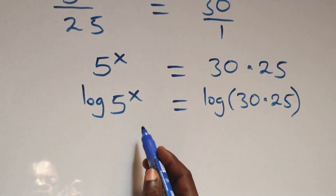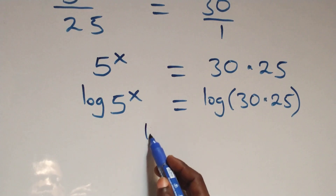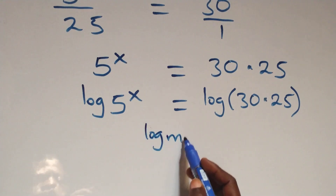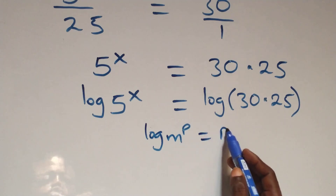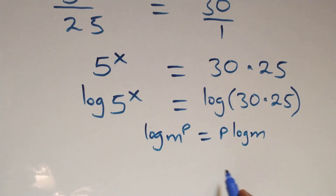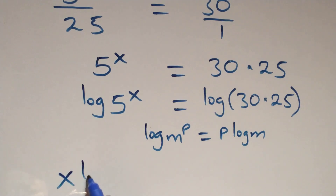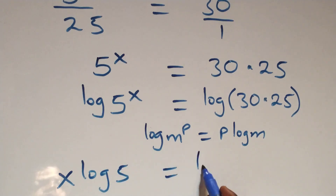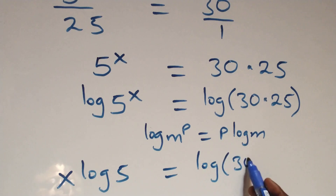The next step here, we apply the power rule of logarithms. When we have log m raised to power p, this is the same thing as p log m. At this here, what we have becomes x log 5 equals to log of 30 times 25.